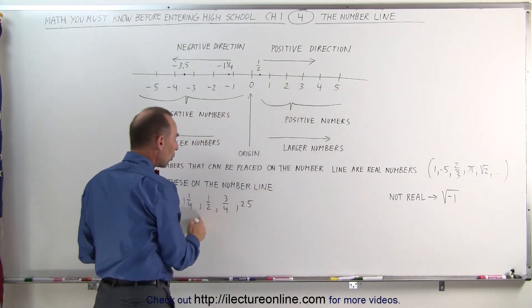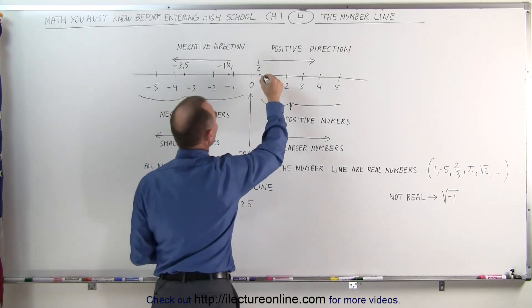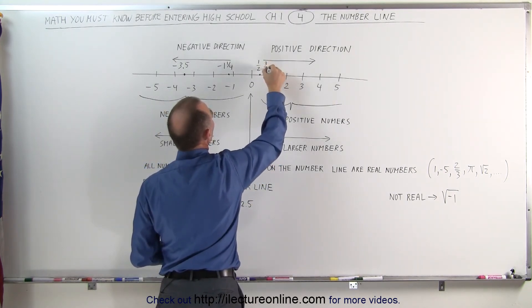The number 3 quarters is 3 quarters away from 0 to 1, which means it's put right about there. This is number 3 fourths.